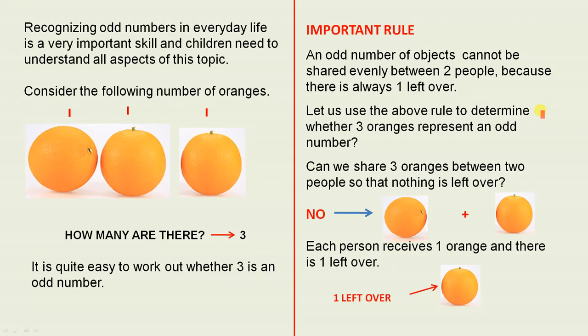An odd number of objects cannot be shared evenly between two people because there is always one left over. Let us use the above rule to determine whether three oranges represent an odd number. Can we share three oranges between two people so that nothing is left over? The answer is no.